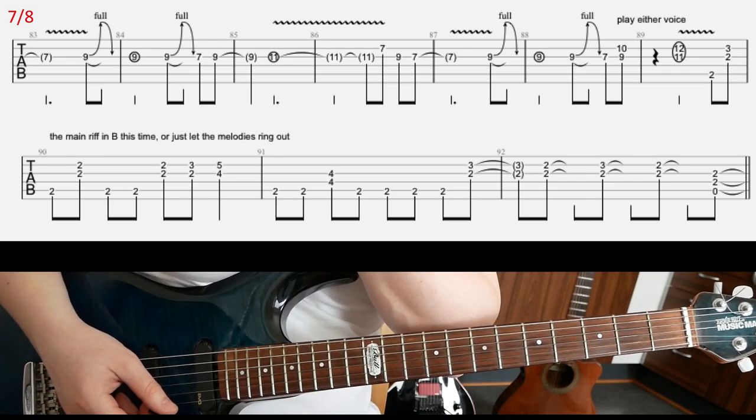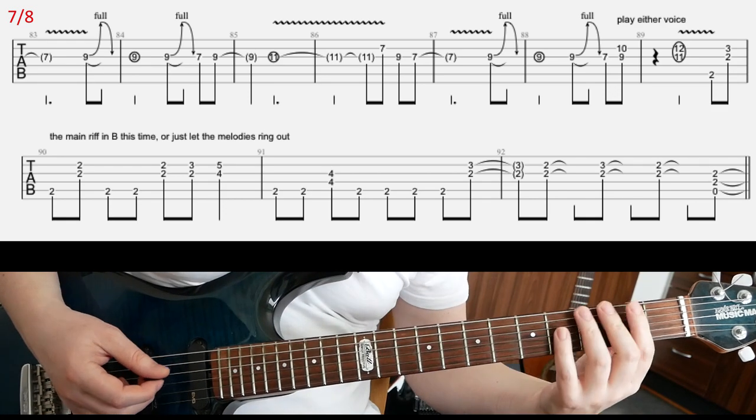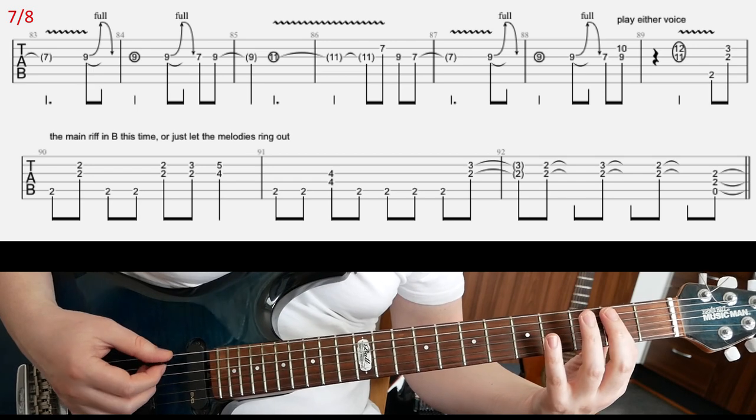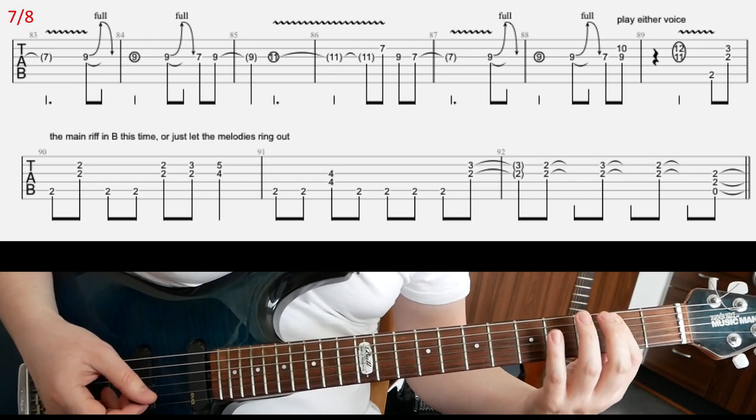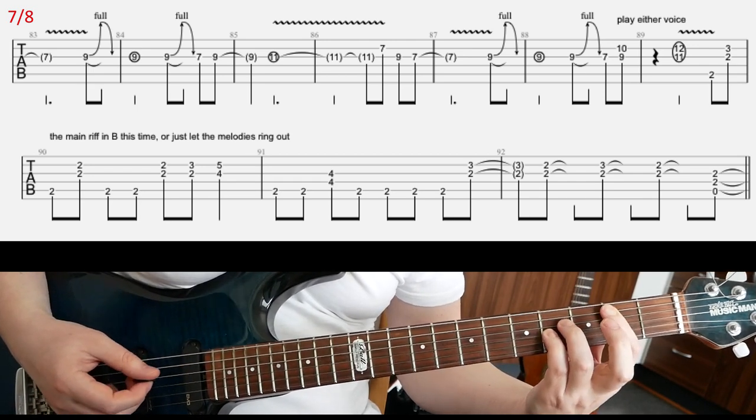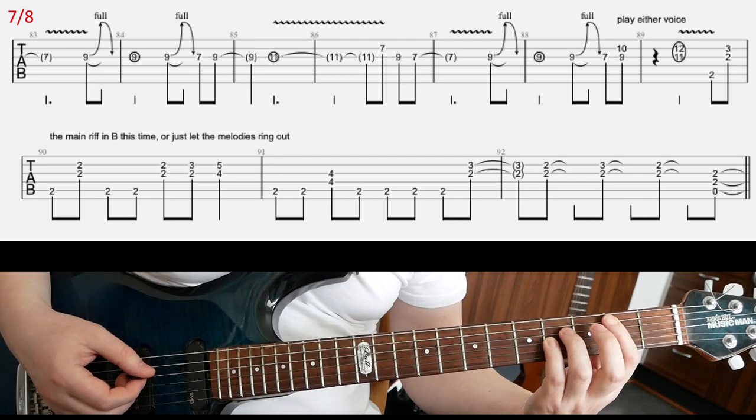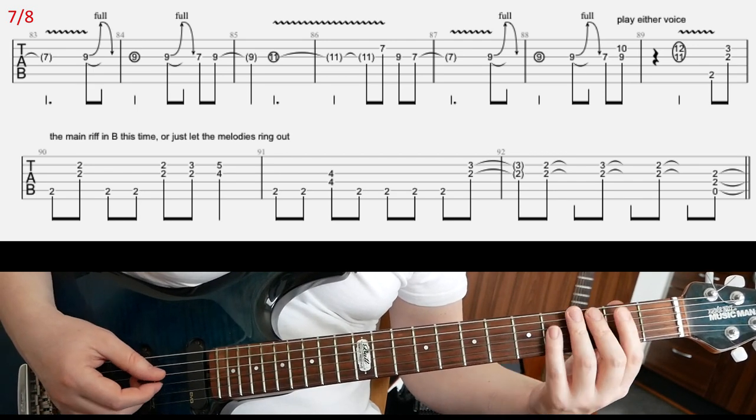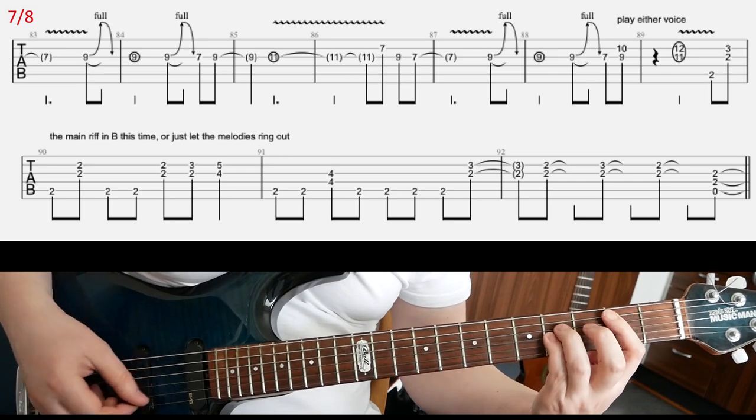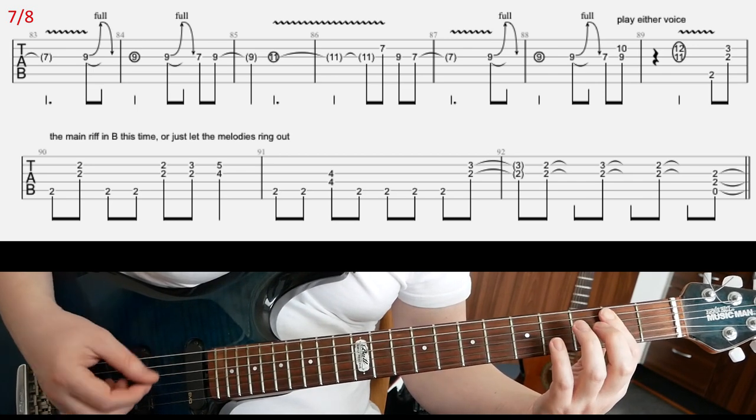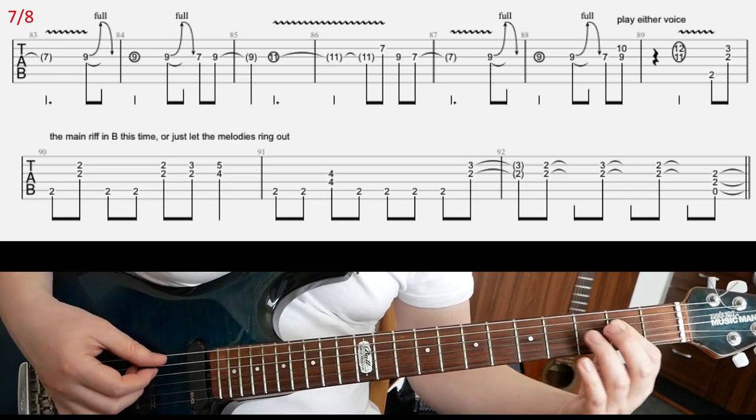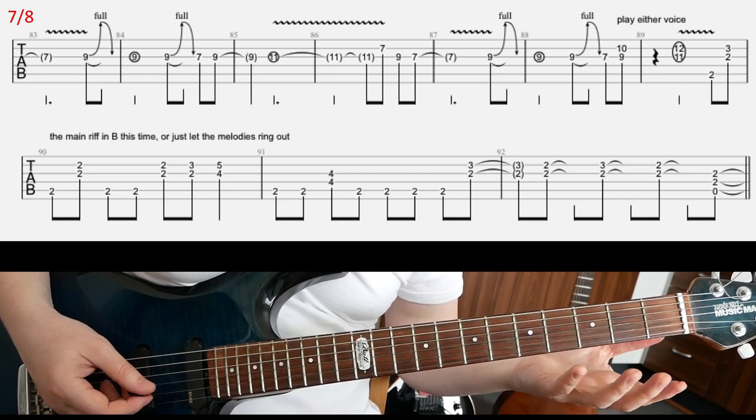Right, and so right after that, they're gonna continue riffing on this main riff. This time though it's in B after pedal note. Second fret on A, note on A, open A. So it's gonna be like this instead, alright?